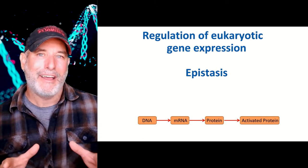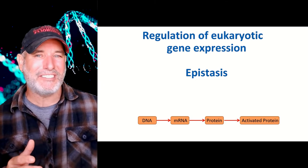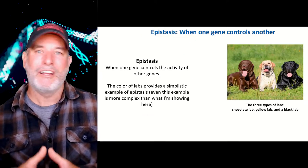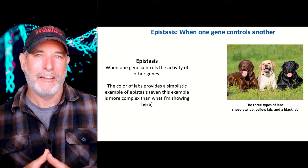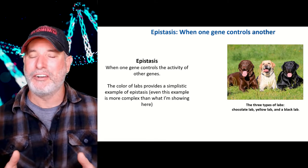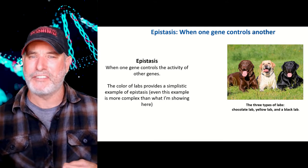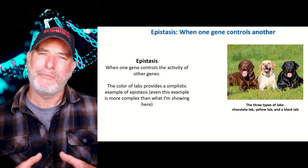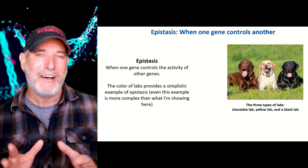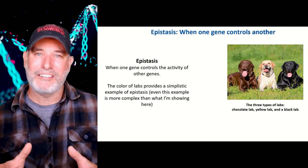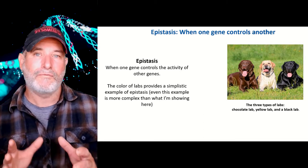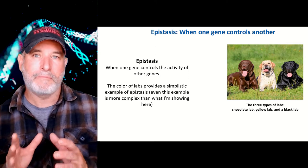Let's talk about epistasis — this is when one gene controls another gene, and it's actually quite common. We can use Labrador retrievers as an example to understand epistasis at a basic level, because things are always a little more complicated than the way we present them in an intro class, but this works.